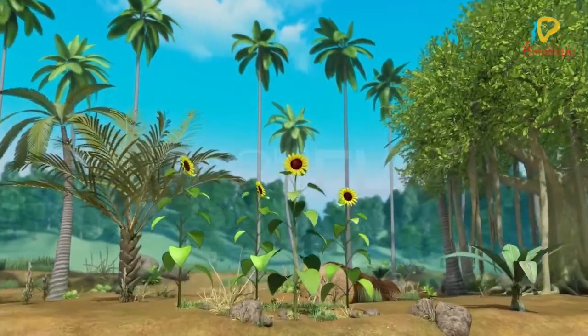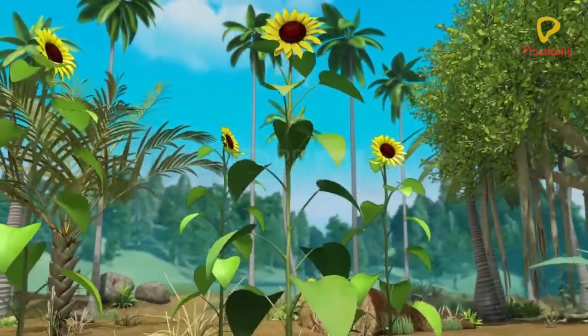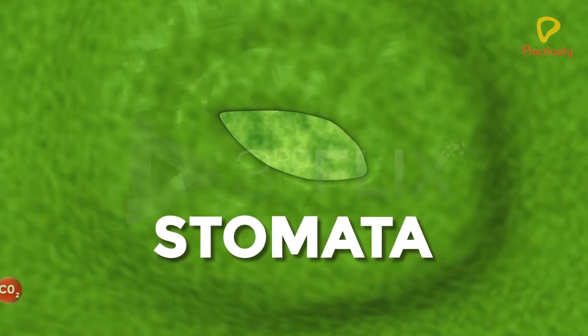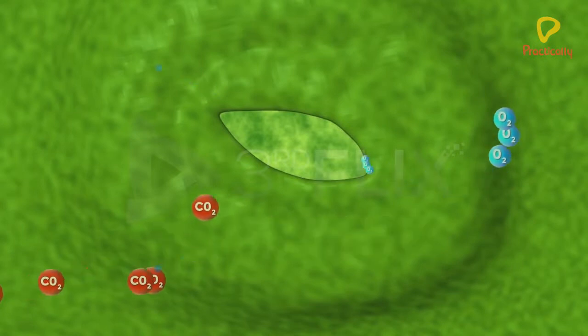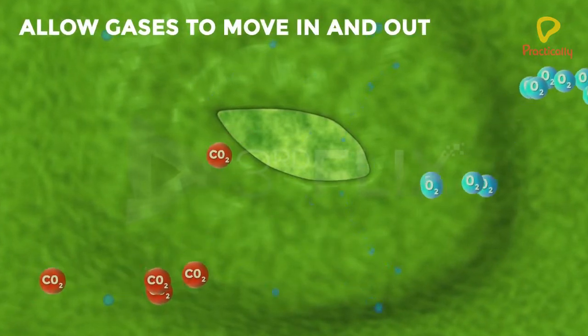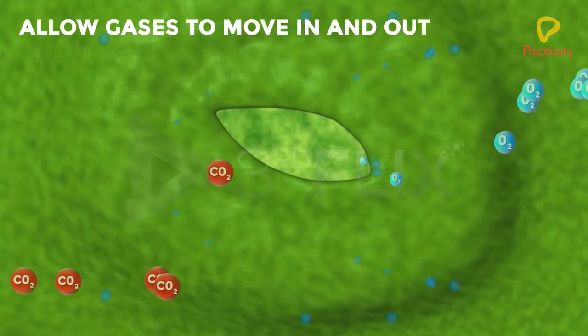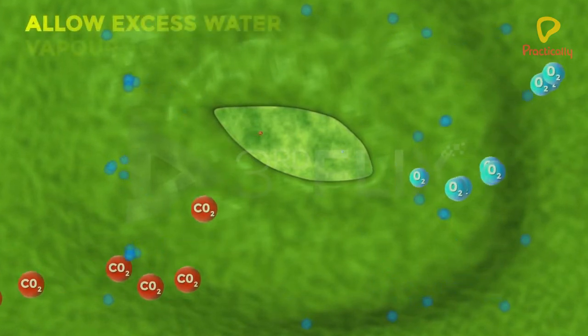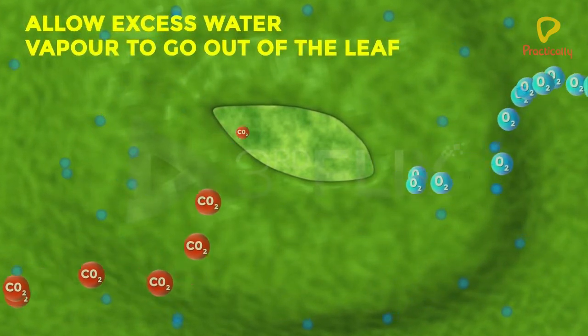There are minute pores on the surface of the leaf which are called stomata. The stomata allow gases to move in and out of the leaf. They also allow excess water vapor to go out of the leaf.